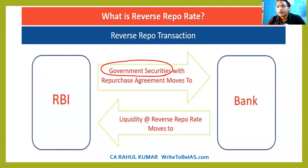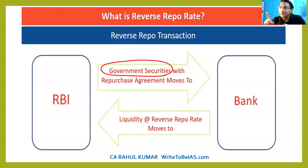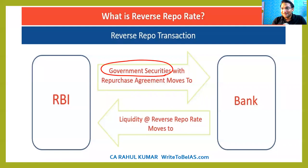The answer is: repo rate is higher than the reverse repo rate. The reason is that reverse repo rate is the rate of interest given by the RBI, and repo rate is the rate of interest given by the commercial bank. RBI will not give more interest to the commercial bank; rather, it will charge more interest from the commercial bank so that it can also earn some profit.